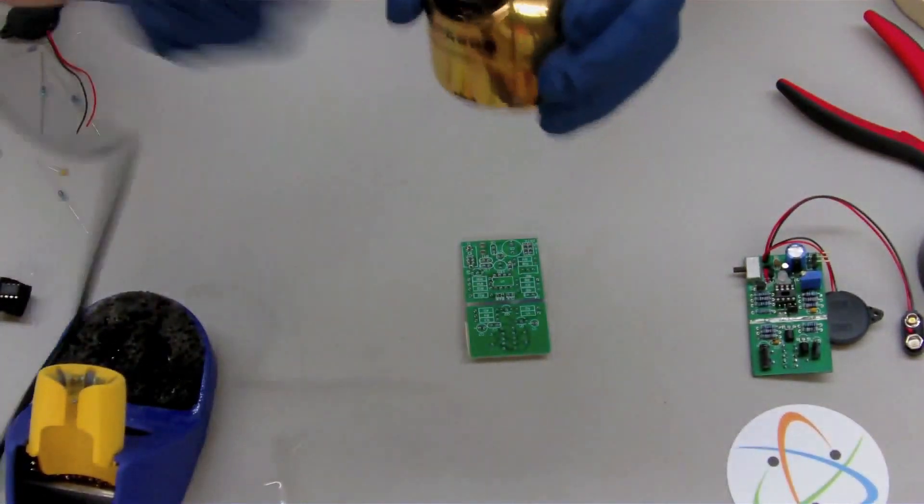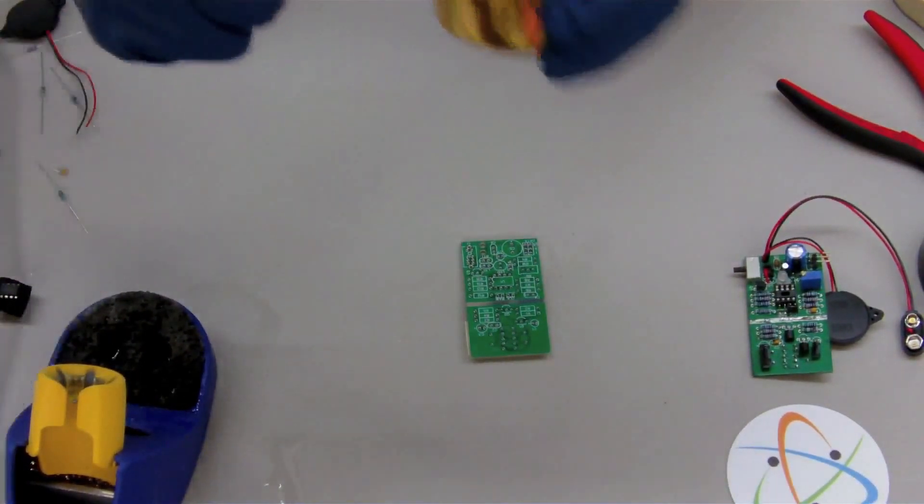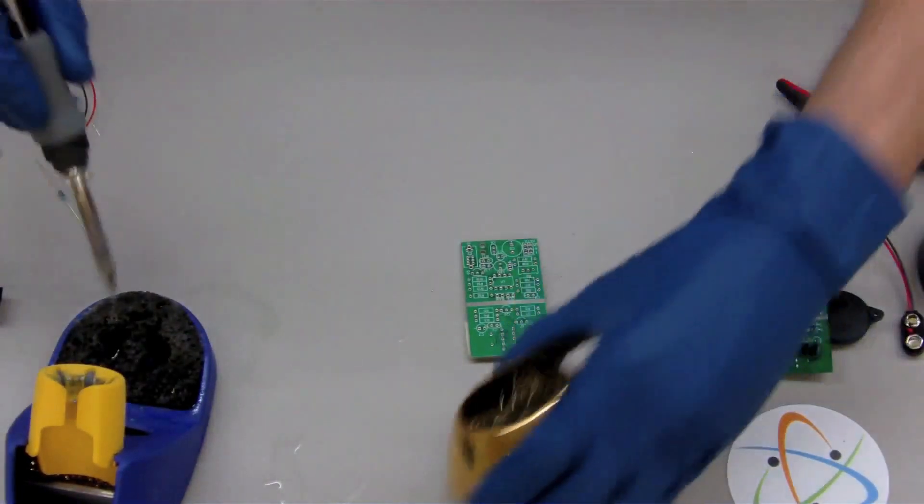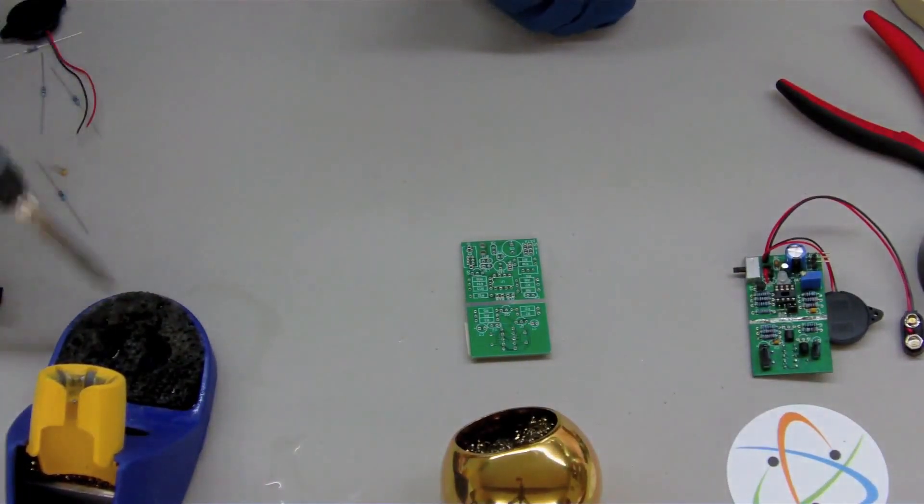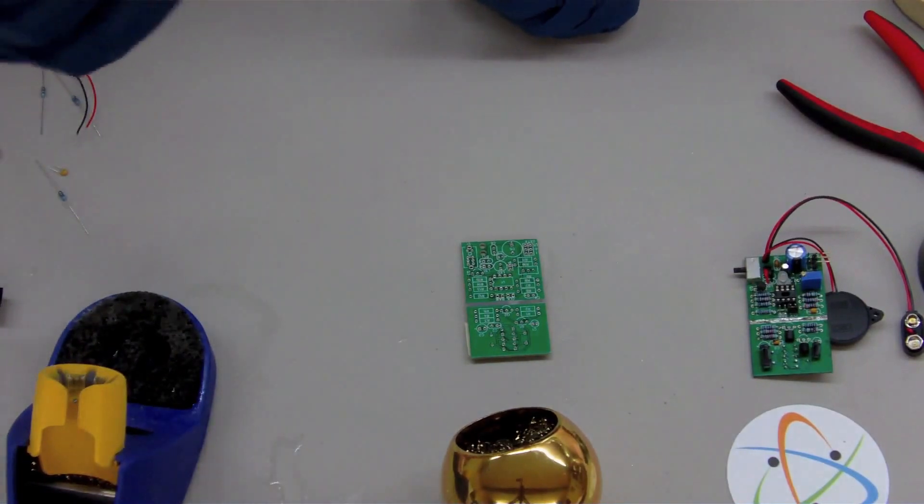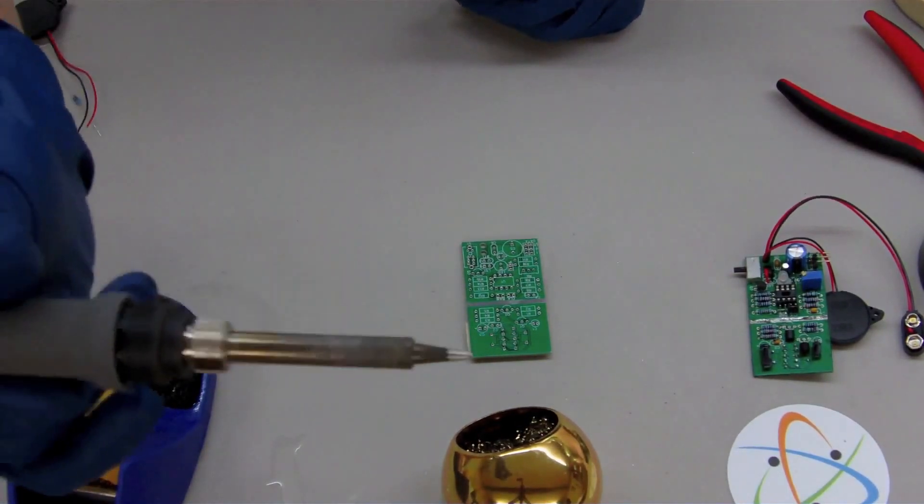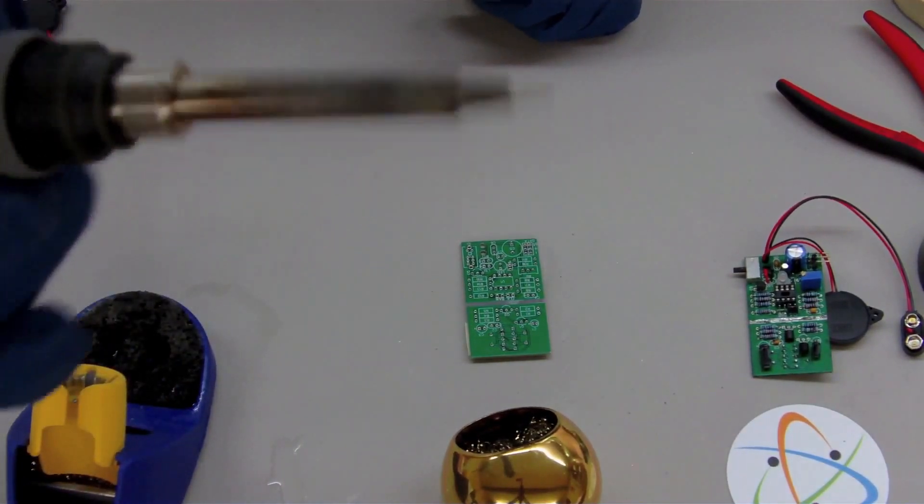If you have a brass ball like this, it's a solder tip cleaner. This one's made by Hacko, great little thing to have. Alright, so got my tip nice and clean, it's shiny.